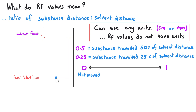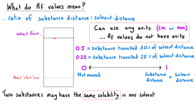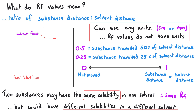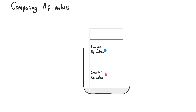An RF value of 0 means the substance has not moved at all, whereas an RF value of 1 means the substance has moved exactly the same distance as the solvent — it will be at the very top of the paper. Two substances may have the same solubility in one particular solvent and so will have the same RF value, but they could have different solubilities in a different solvent and therefore different RF values. Looking at a chromatogram, the blue dye will have a larger RF value than the red dye because it has travelled further up the paper.